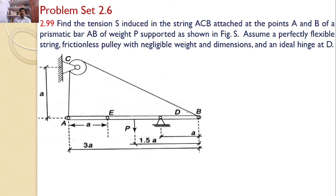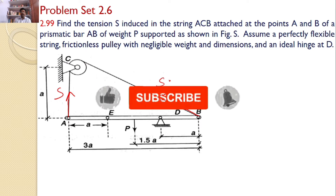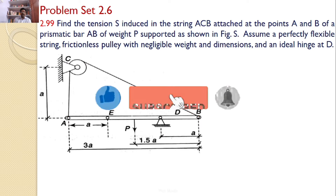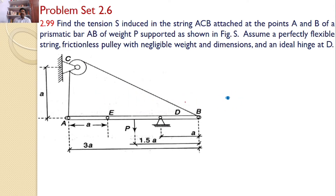There is a prismatic bar AB and it is attached with a string ACB. ACB is a single string, which means throughout the string we can find only the same tension — let us say S. The tension S is present at both ends. By considering the free body diagram of AB, the remaining hinges are ideal hinges, so no reactions will develop there. Because of the force P, what tensile force develops in the string ACB is our interest.